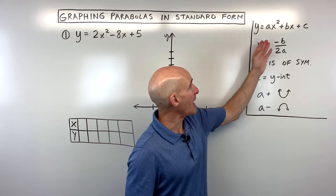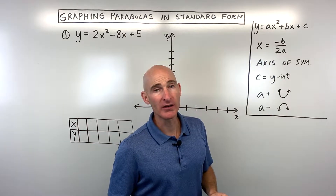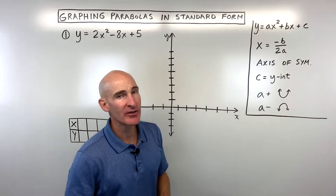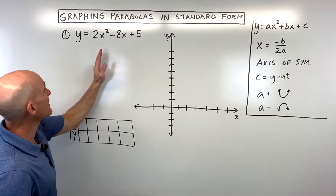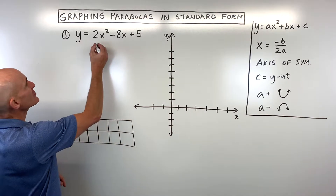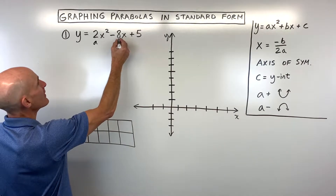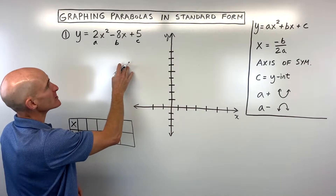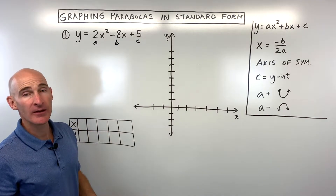By plugging the x-coordinate back in, we can find the y-coordinate of the vertex. In our first example, the a value is 2, the b value is negative 8, and the c value is 5. Make sure you capture whether it's positive or negative.